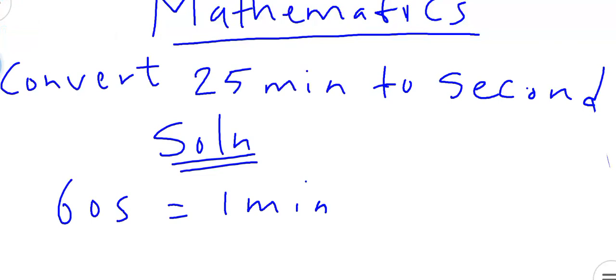And also from here, we are told to calculate 25 minutes to seconds. So from here, we don't know the number of seconds yet. So we can say x seconds equals 25 minutes.